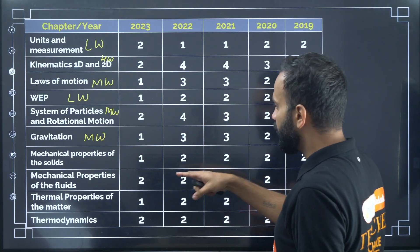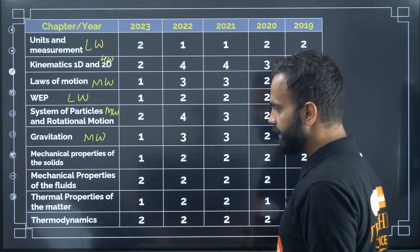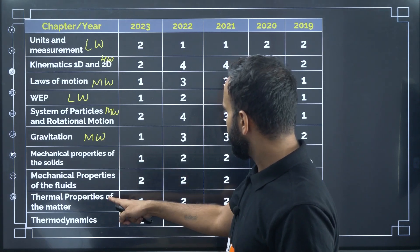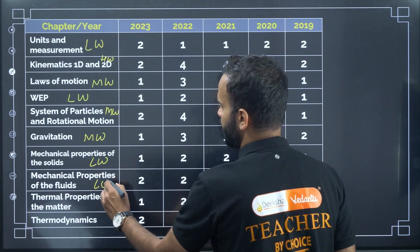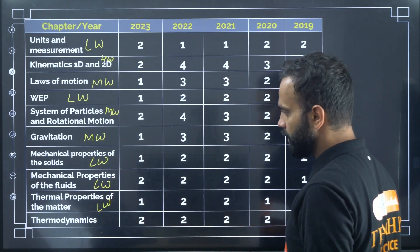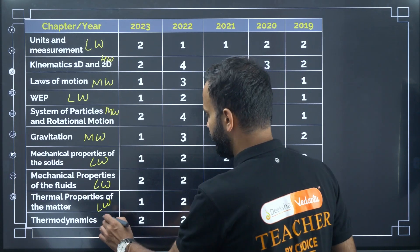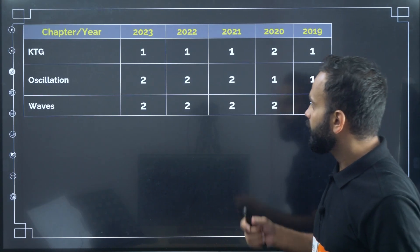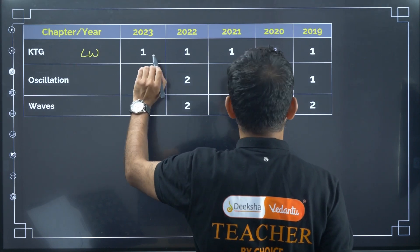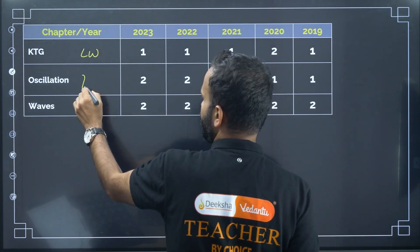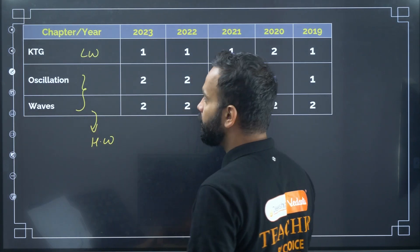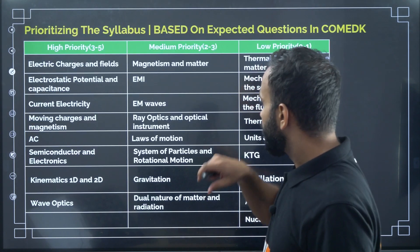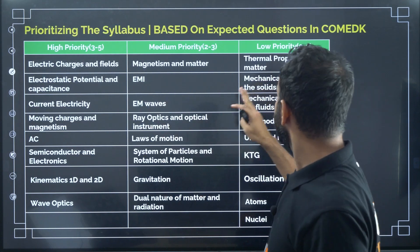Mechanical Properties of Solids, Mechanical Properties of Fluids, and Thermal Properties of Matter all come under low weightage chapters. Thermodynamics is also a low weightage chapter — all years they asked only one to two questions. KTG is a low weightage chapter. Oscillations and Waves combined form a high weightage chapter; individually, oscillations and waves are low weightage chapters.